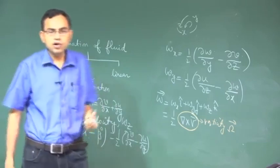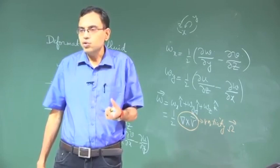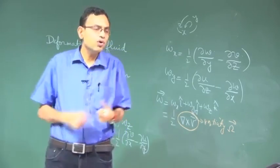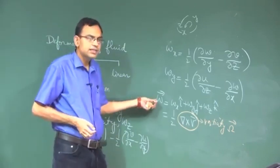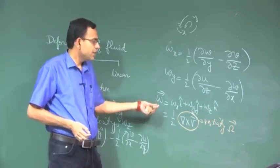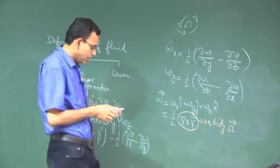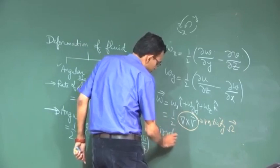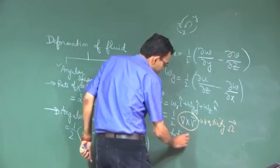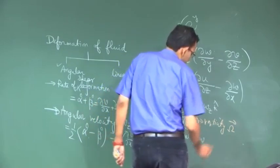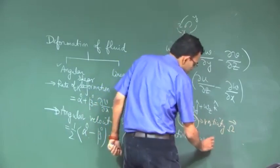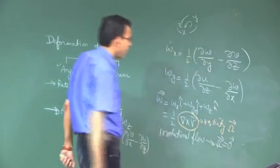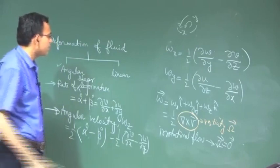Physically, vorticity means the rotationality in the flow. If there is no rotation in the flow — if the angular velocity is zero — then it is called irrotational flow.